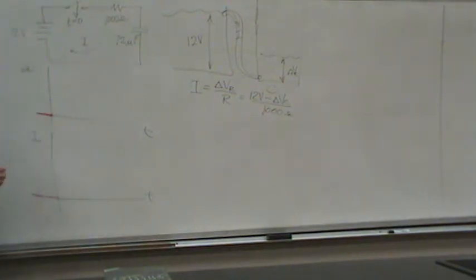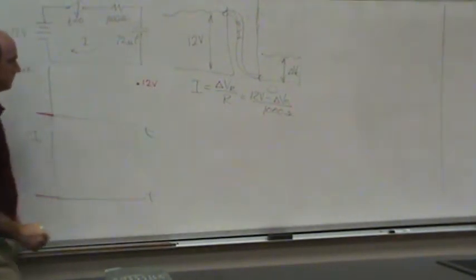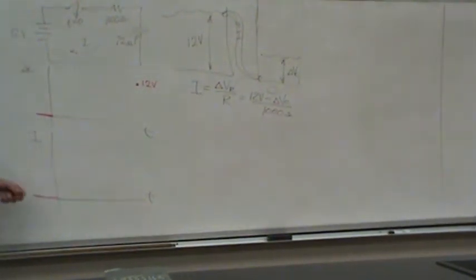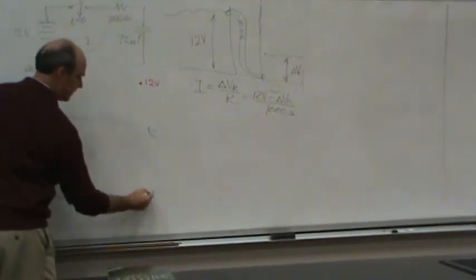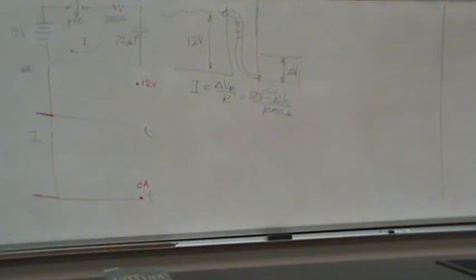So we know that over time, long term, I must be at 12 volts here and my current must be zero way out here, zero amps, long term.